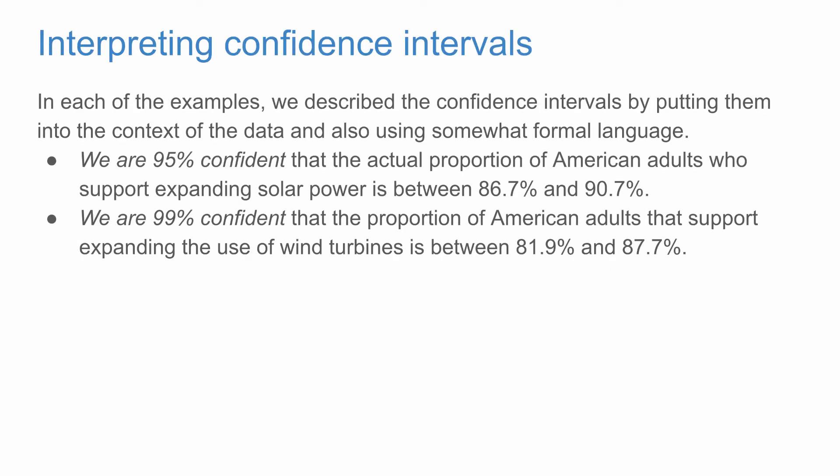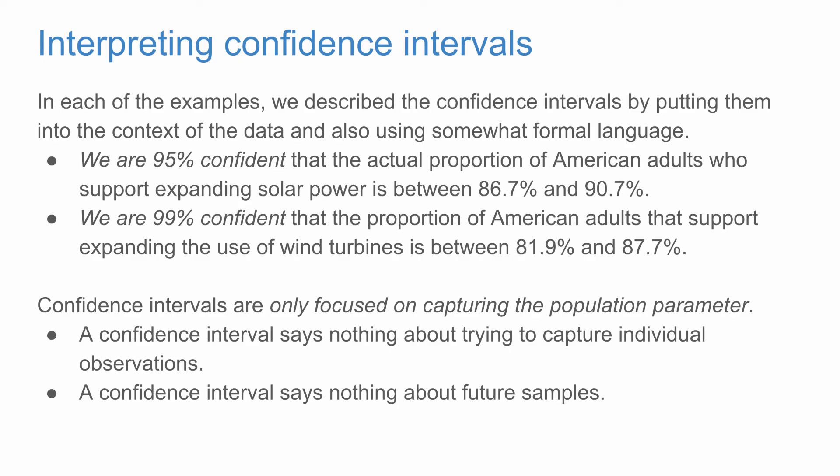In each of these examples, we describe the confidence intervals by putting them into the context of the data, also using somewhat formal language: 'We are 95% confident that the actual proportion of American adults who support expanding solar power is between 86.7% and 90.7%,' and 'We are 99% confident that the proportion of American adults that support expanding the use of wind turbines is between 81.9% and 87.7%.' Confidence intervals are only focused on capturing the population parameter. A confidence interval says nothing about trying to capture individual observations, and it also says nothing about future samples.